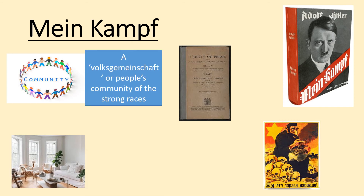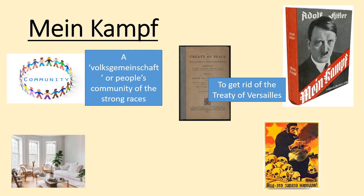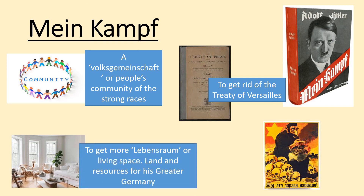The first theme is Volksgemeinschaft, which translates as 'people's community' — meaning a group of strong Aryan races, the blonde-haired, blue-eyed Germans, who would effectively conquer smaller, weaker races like the Jews. Second, to get rid of the Treaty of Versailles at whatever cost — the reparations, the blame clause, and to rebuild the army. Third, to get more Lebensraum, or living space — land and resources for this giant people's community. And fourth, to get rid of all Jews.